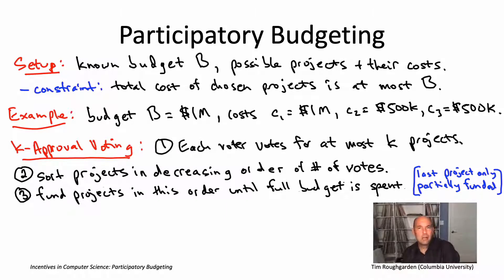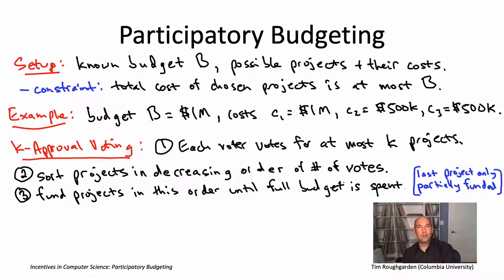That's K approval voting. It certainly has the benefit of being simple and pretty easy to understand — you just pick your K favorite projects and vote for them. However, it does have one serious problem: it does not force voters to be cognizant of the costs of the various projects.